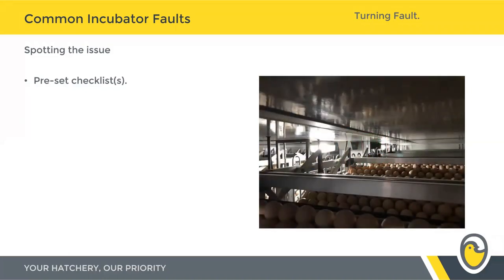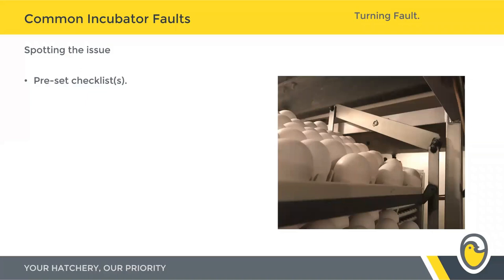If you're fortunate enough to have windows in your setters, a good way of spotting a problem is looking through the tops of the trolleys. You're looking for the heights of those hanger bars to be nice and level across the full length of the machine. If you see one that's dropped down a bit lower or is a little high, that's a pretty good indicator something's gone awry — either a mechanical jam is not allowing it to turn fully, or the trolley may just not be in the correct location and interfacing with the turning system correctly.